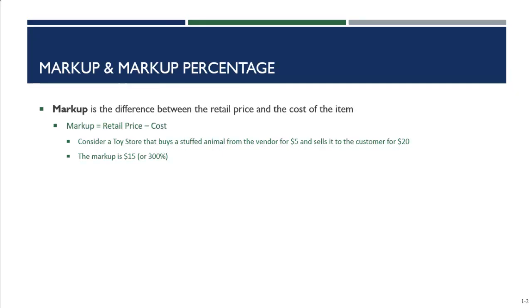If you think about a toy store that buys a stuffed animal from a vendor for five dollars, the cost of the item is five dollars, yet they sell it to the customer for twenty dollars. What is the markup? Well, the markup is fifteen dollars. We take our retail price of twenty dollars minus our cost of five dollars and we get fifteen dollars.